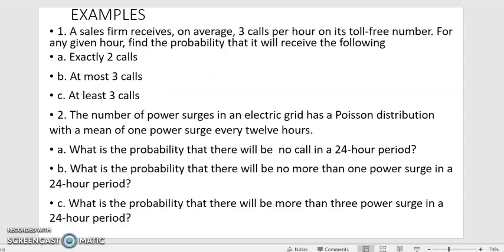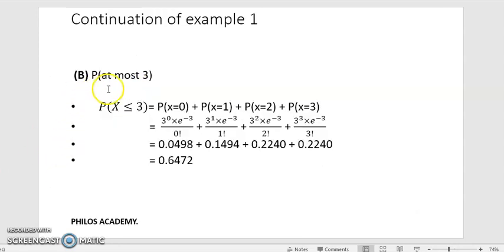Let's look at question B. Question B says find at most 3 calls. Probability of at most 3 means that X is less than or equal to 3. At most 3 means the highest, the highest power should be 3. That's the meaning. The highest should be 3.